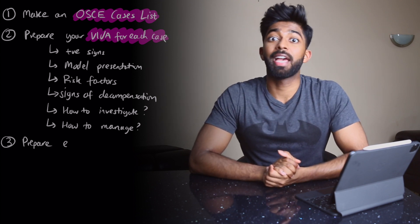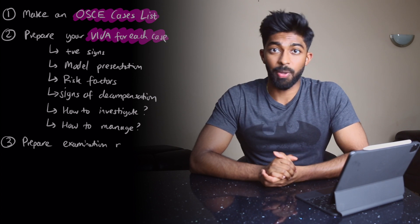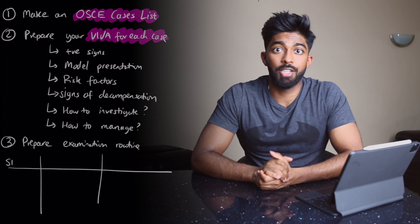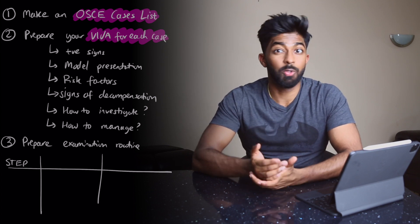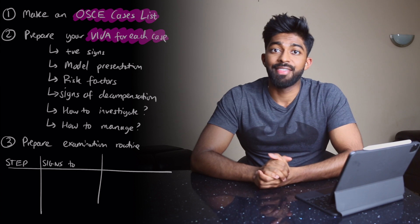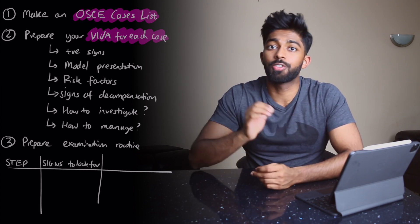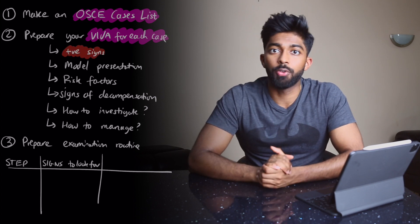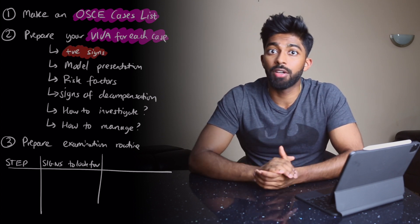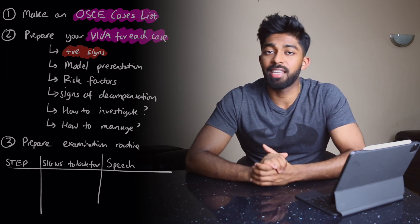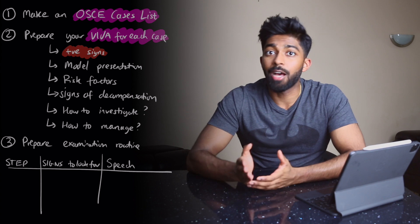Step number three is where you prepare your examination routine. The way I did this is with a simple table. On the far left-hand column, I'd have each step of the examination routine — once again using Google or YouTube to work out each step. In the middle column, I'd have the specific signs I was looking for in each of those steps — and we already know what signs we're looking for from all the prep we did for our VIVA. In the far right-hand column, I'd have my speech: what I'd be saying to the patient and the examiner while doing the examination. That's the three-step retrospective approach.